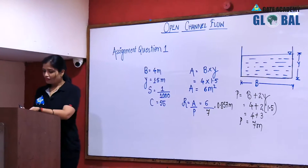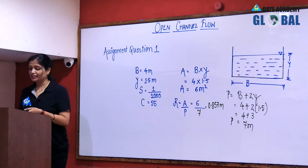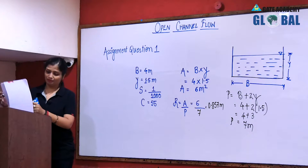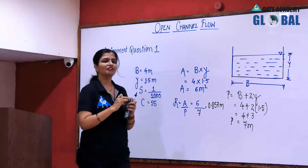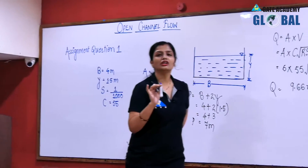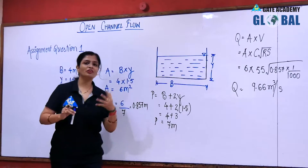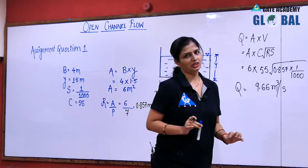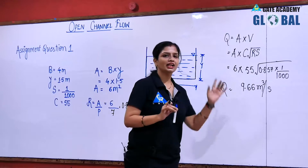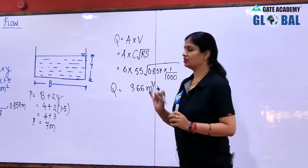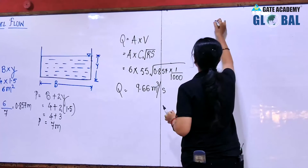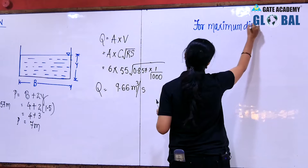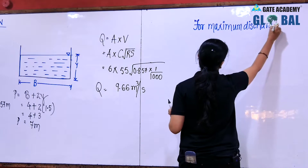Now, what is given in the question: we have to design the channel section to increase the discharge to a maximum. If you recall the case of the most efficient or most economical rectangular channel section, our aim was to get the maximum discharge.